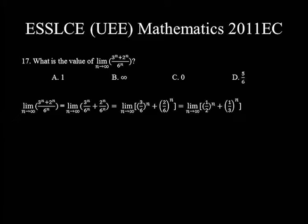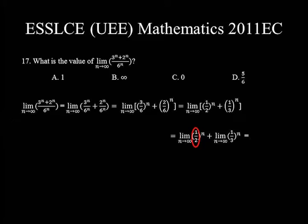By the addition rule of limits, lim[n→∞] (1/2)ⁿ + lim[n→∞] (1/3)ⁿ = 0 + 0 = 0. Choice C is the correct answer.